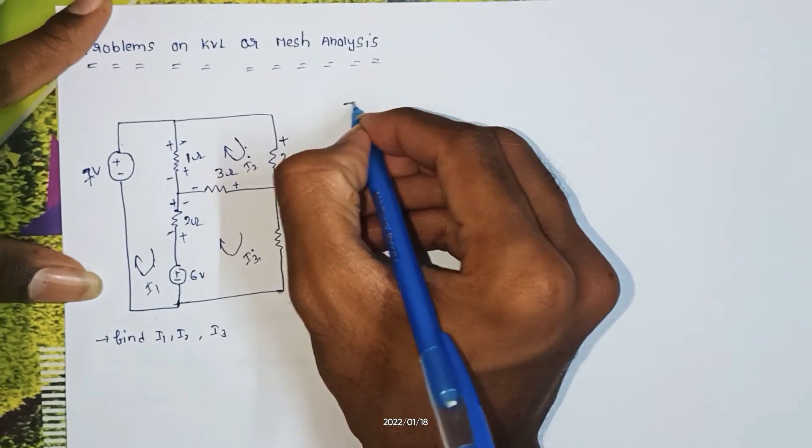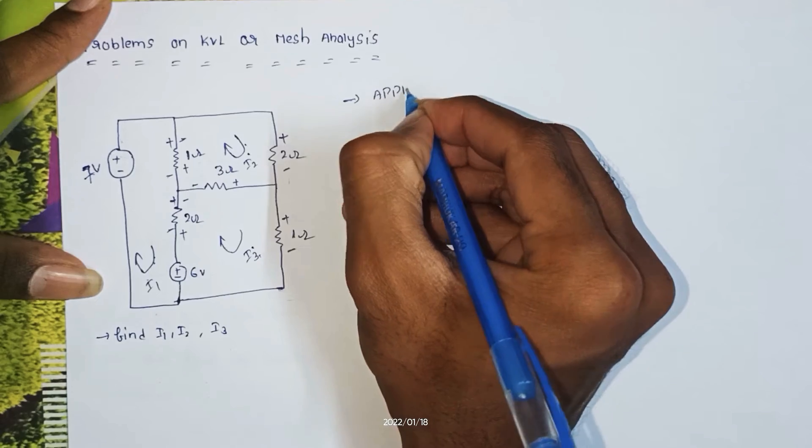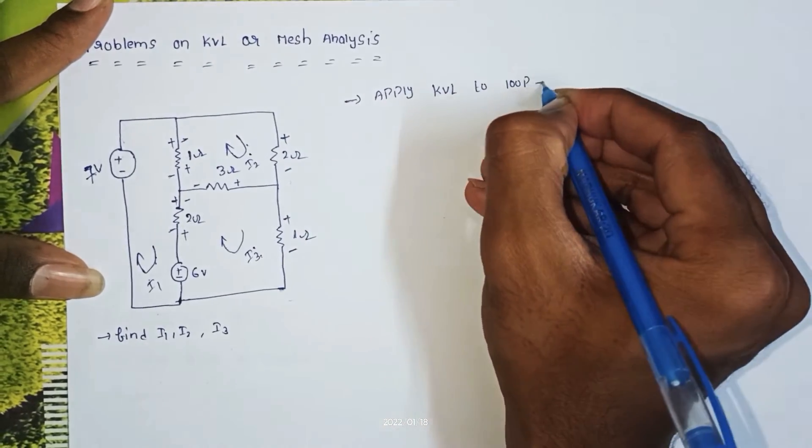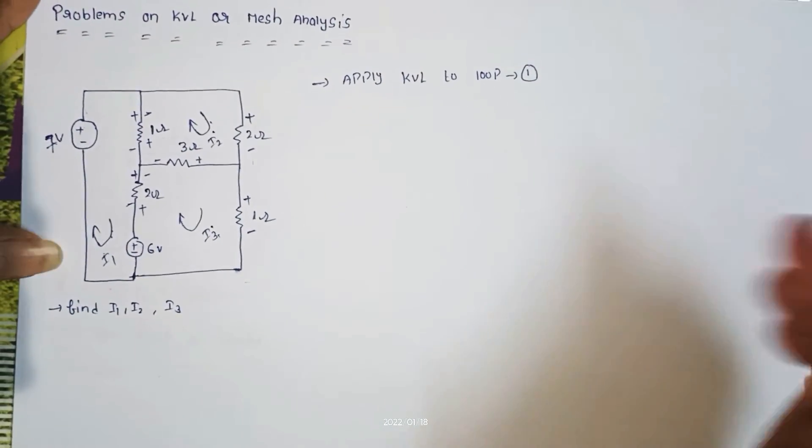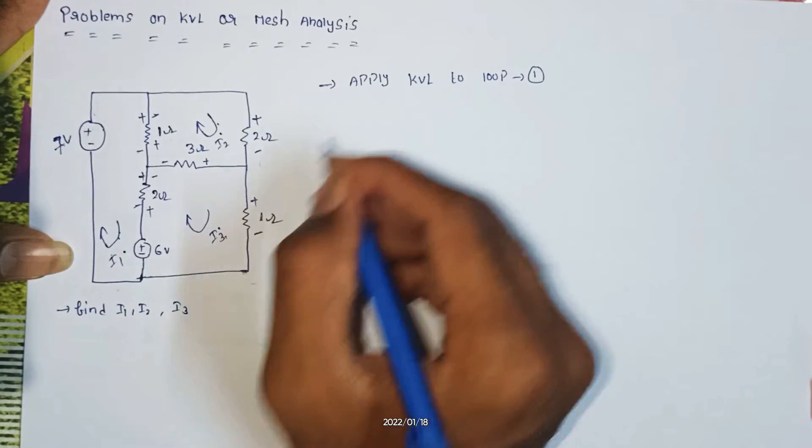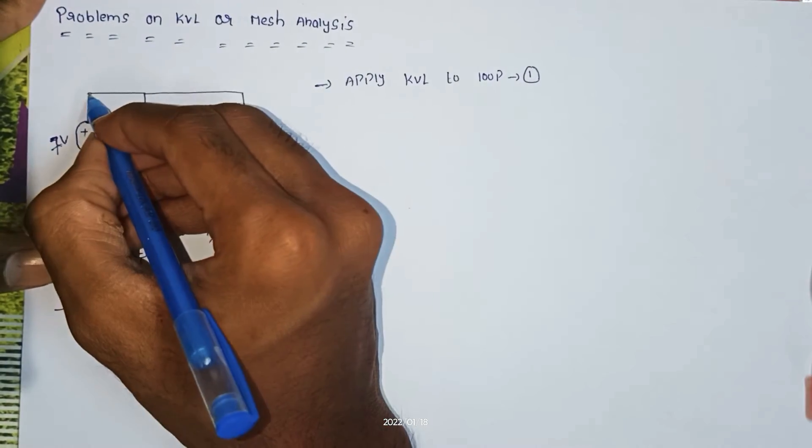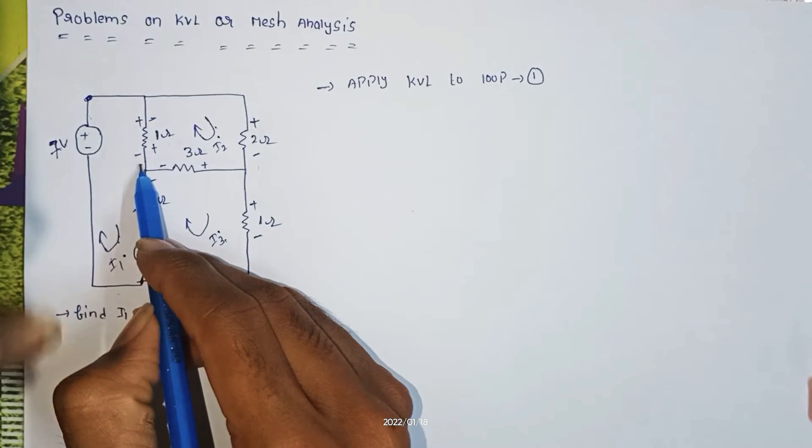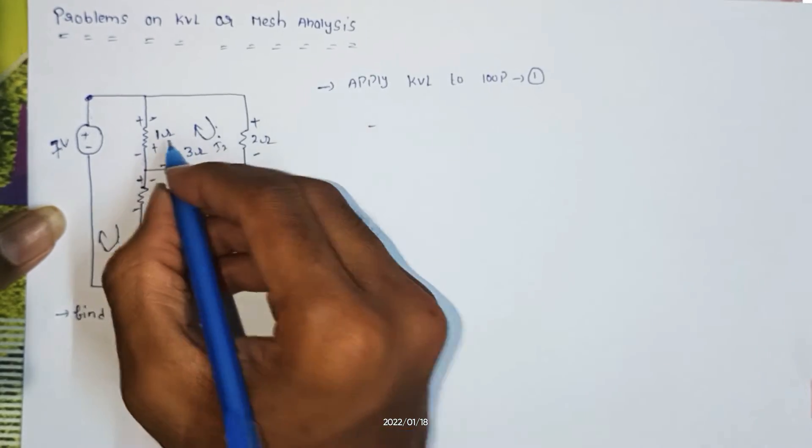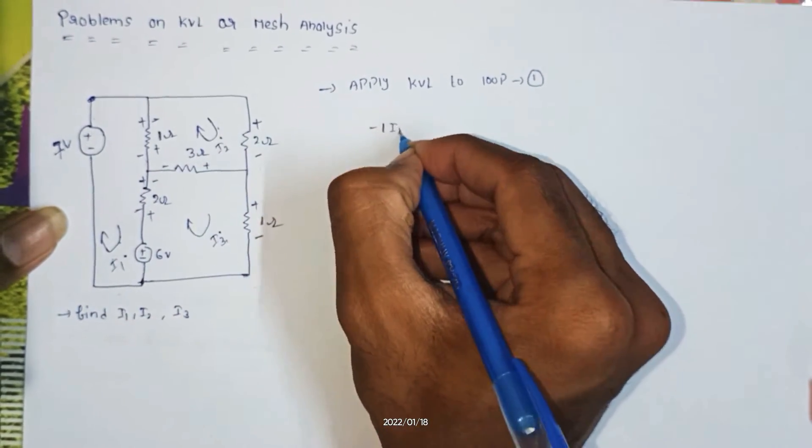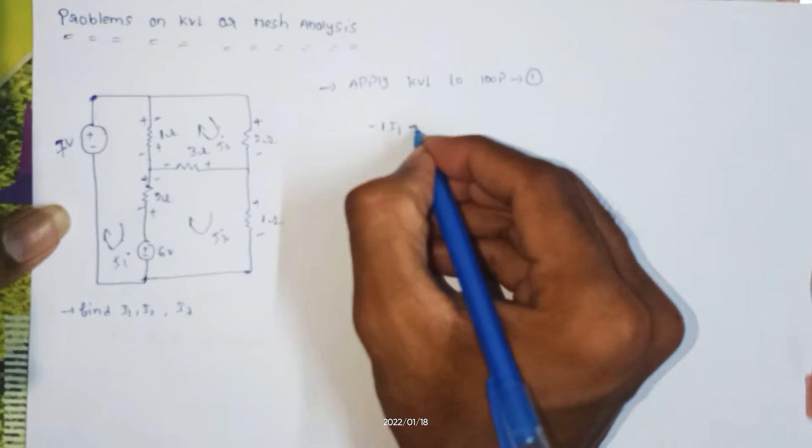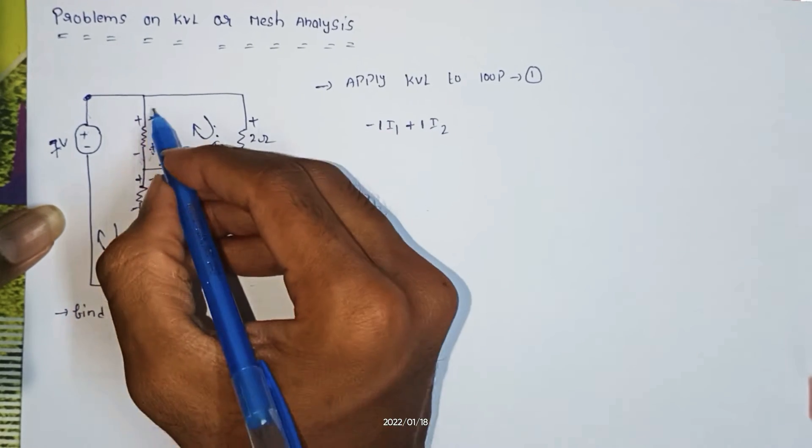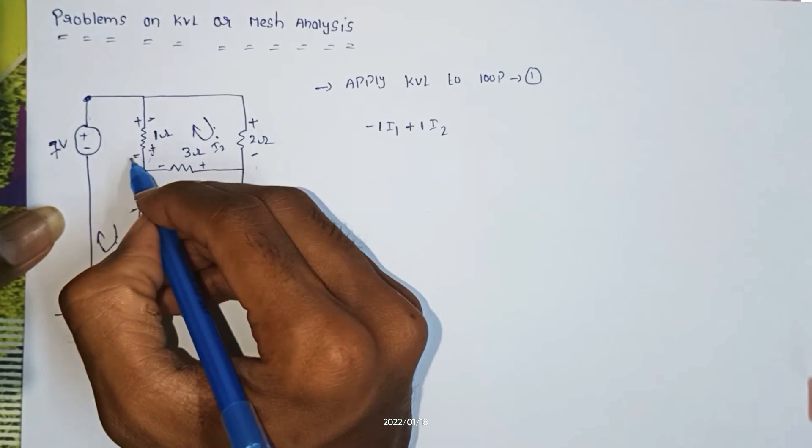First, apply KVL to loop 1. Trace the loop: minus I1, minus 1 I1. Next, plus 1 I2. Loop 2 uses positive terminal, so leaving, I1 leaving minus I2 leaving, plus positive.